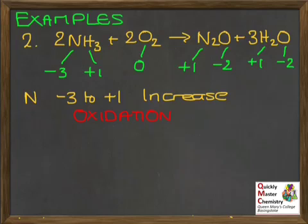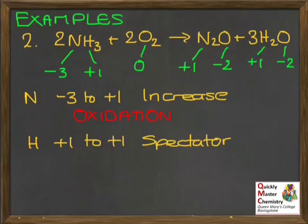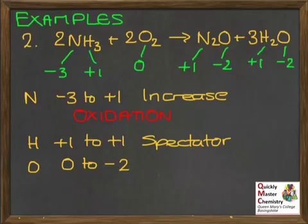We've then got the H in the NH3, which starts at plus 1 and ends up in the water still at plus 1, so H is a spectator. Then there's the oxygen, which is 0 to start with as O2. By the time it's on the right in both the N2O and the water, it's minus 2. Going from 0 to minus 2 is a decrease, and therefore that's reduction.